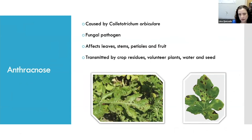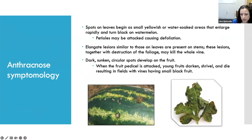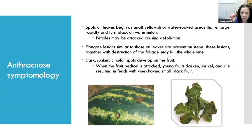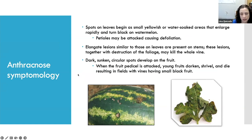Now let's talk about anthracnose. This is caused by Colletotrichum orbiculare, a true fungal pathogen that also affects the entire plant. It survives in crop residues, volunteer plants, water, and seed. You typically see foliar lesions, and in watermelon I get a lot of people confusing anthracnose with downy mildew. Downy mildew some years has smaller foliar lesions that look more like anthracnose, while anthracnose will have a little more of a concentric ring look. Gummy stem blight lesions will look much darker, bigger, and more at the leaf edges; when it's smaller and more widespread in the leaf it's probably more anthracnose or downy mildew.